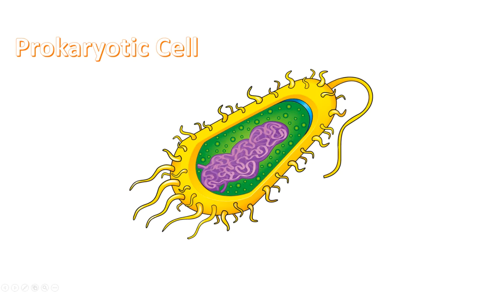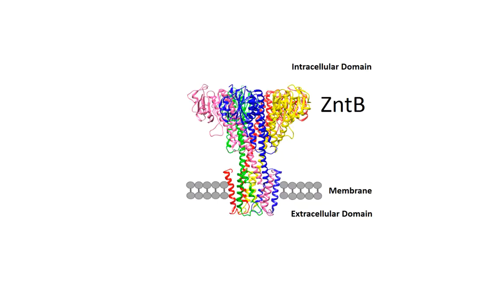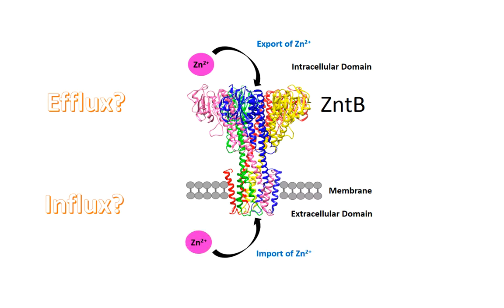ZntB is a prokaryotic zinc transporter protein that spans the intracellular, transmembrane, and extracellular regions. There is controversy as to whether ZntB is an efflux or an influx transporter. As an efflux transporter, it would export divalent zinc out of the cell. As an influx protein, it would import divalent zinc into the cell.